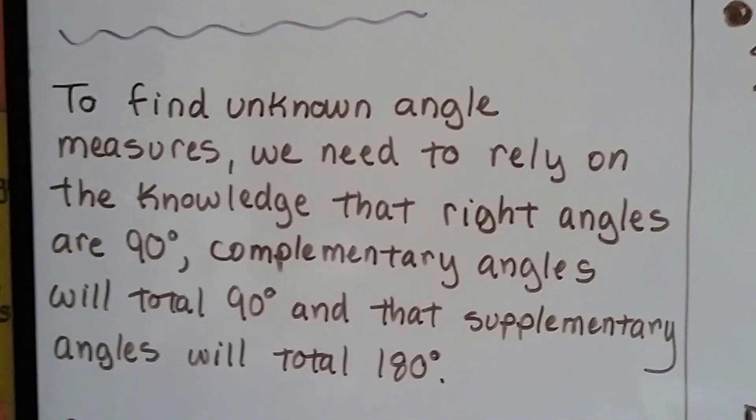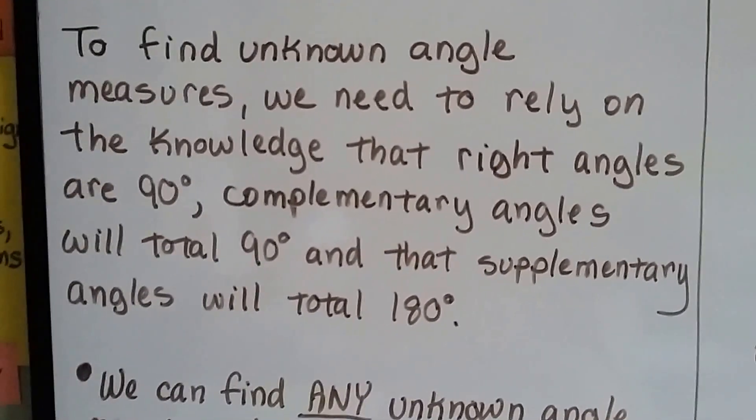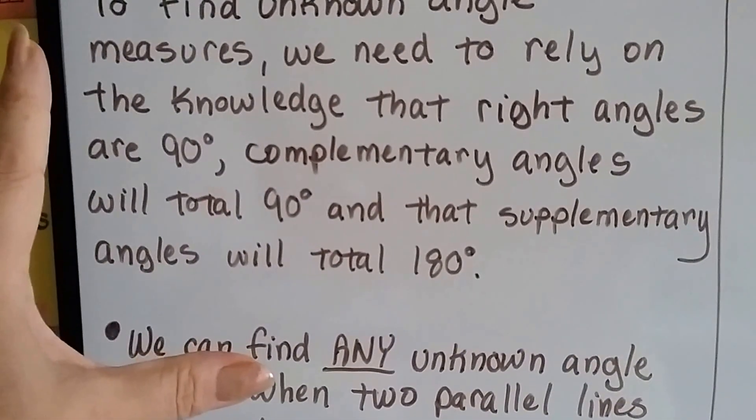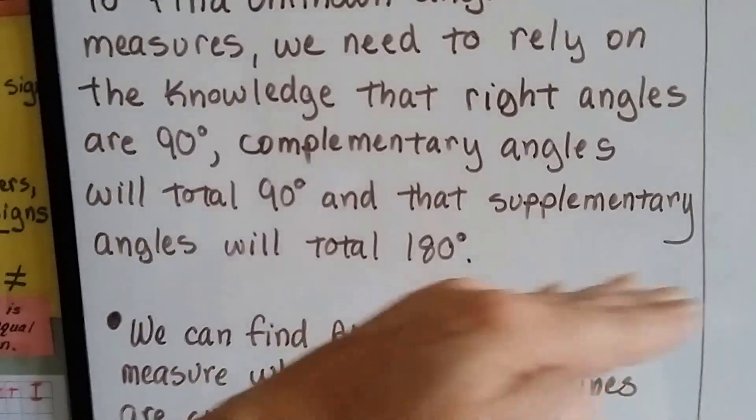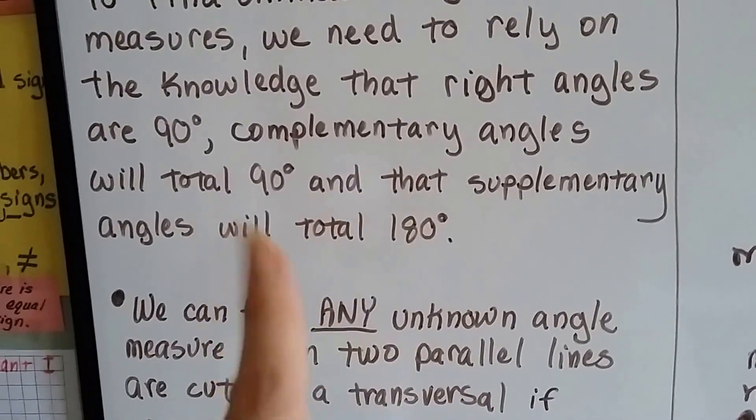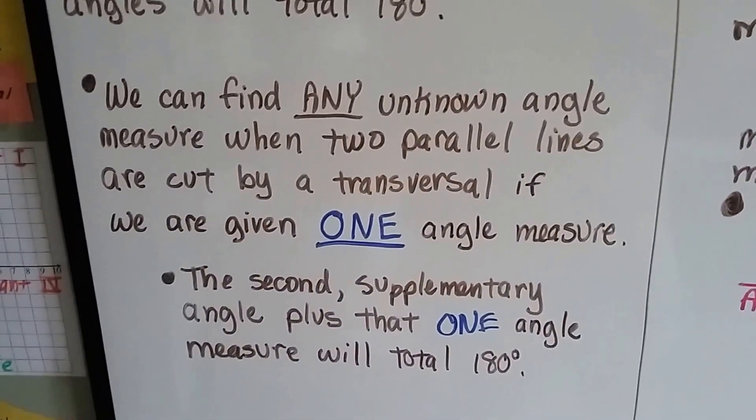So to find unknown angle measures, we need to rely on the knowledge that right angles are 90 degrees, complementary angles will total 90 degrees when put together, and that supplementary angles will total 180 degrees, like a straight line. So when you put those angles together, they make 180.